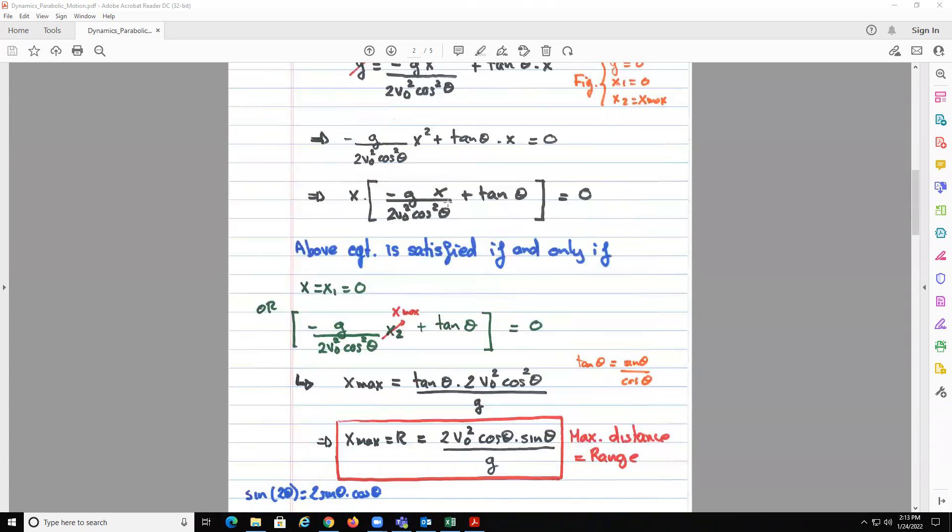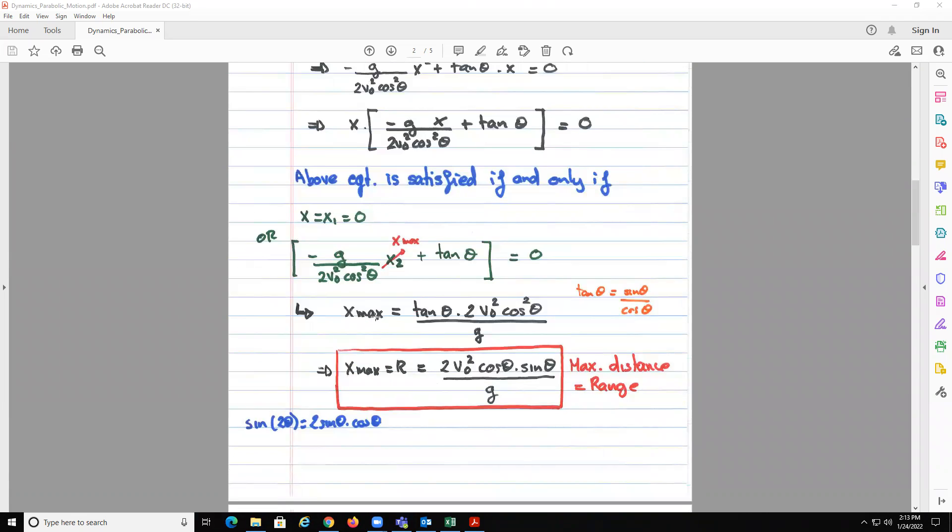So basically, we solve for x, this term over here within bracket, and we get that x maximum, which is the range, equal to tangent theta times two v naught squared cosine squared theta divided by g, but if we use, we just rewrite it. If we do tangent theta is equal to sine theta over cosine theta, this becomes two v naught squared cosine theta sine theta divided by g. Sometimes you can rewrite this, the two cosine theta sine theta as sine two theta, but I think this form is good enough.